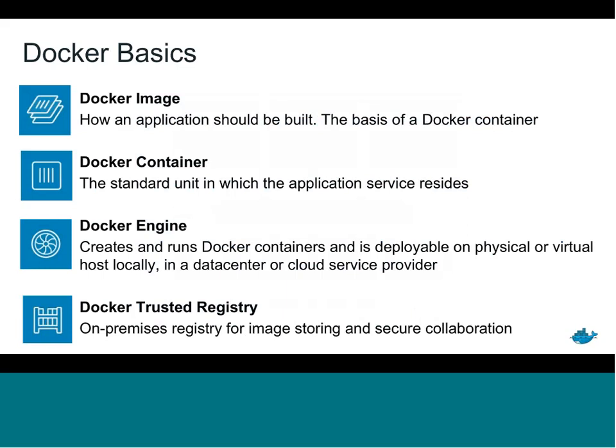Before we talk more about the differences between containers and virtual machines, there are key terms you should know. The Docker image is essentially a snapshot of an application — how it should be built, and it serves as the basis for the container. The Docker container is that standard unit where the application and its binaries reside. The Docker engine is the installed Docker software — it gets installed in the VM or bare metal server and creates and runs containers. The registry is where image content is stored; Docker Trusted Registry is our on-premises registry for storing and securing image content.